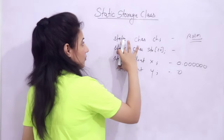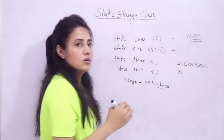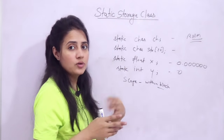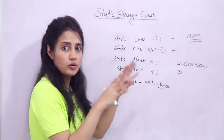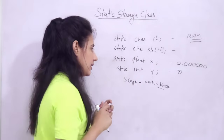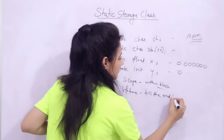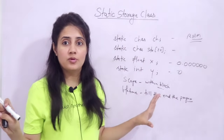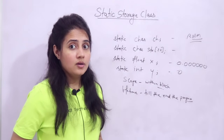For the static storage class, scope is within the block — the function or block in which you declare that variable. Local declaration is allowed, as well as global declaration outside of main. For auto and register, global declaration is not allowed, only local. Now, the lifetime of a static variable is till the end of the program — throughout the entire program, the variable remains alive.